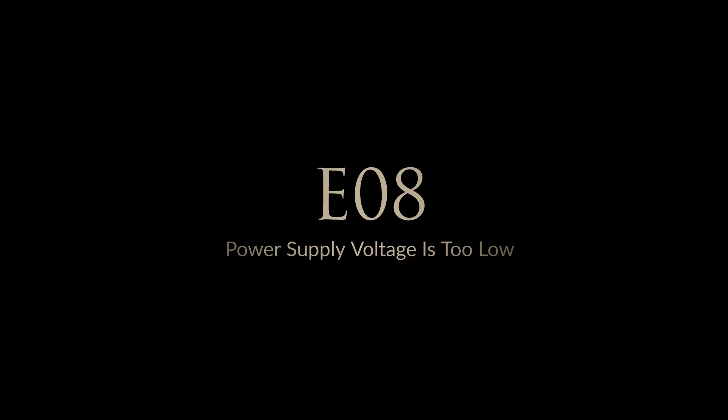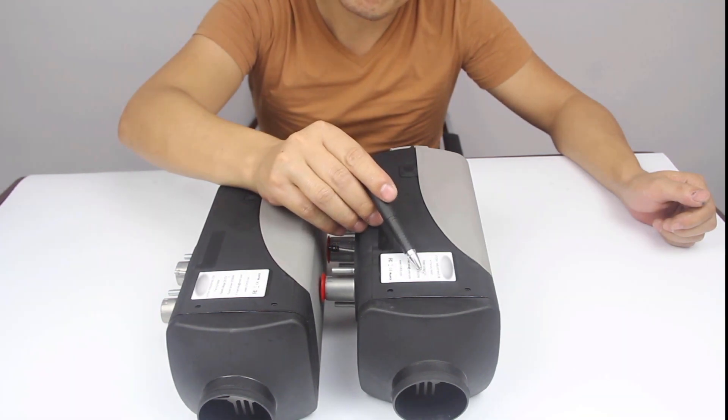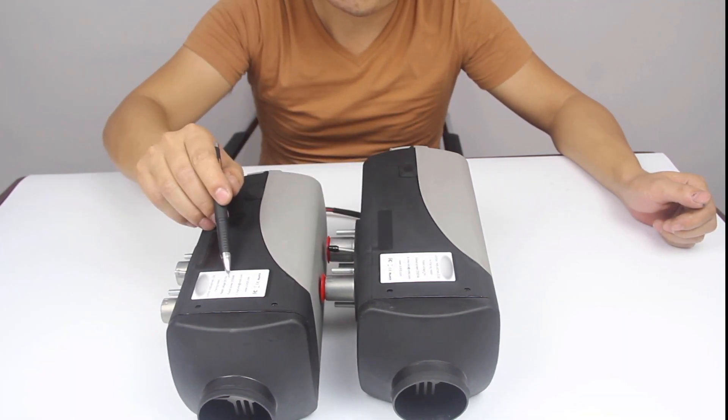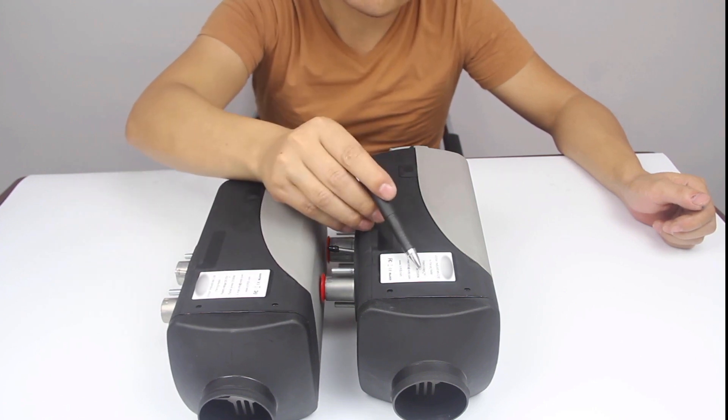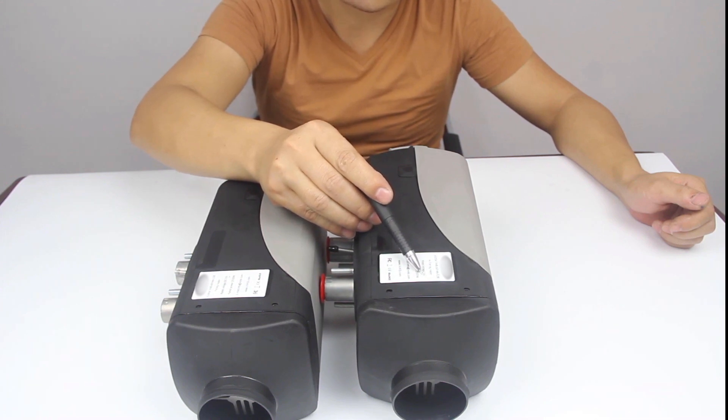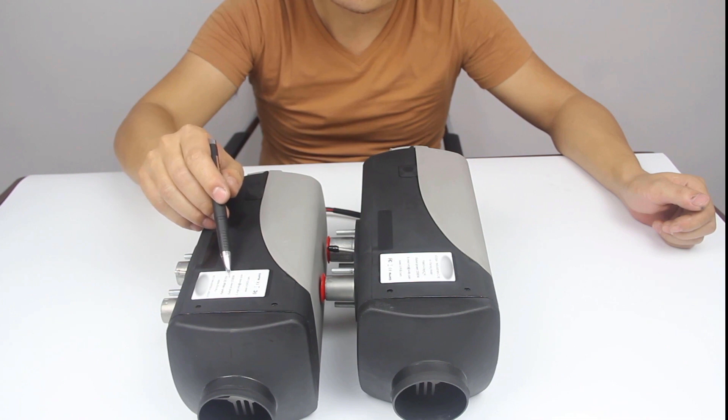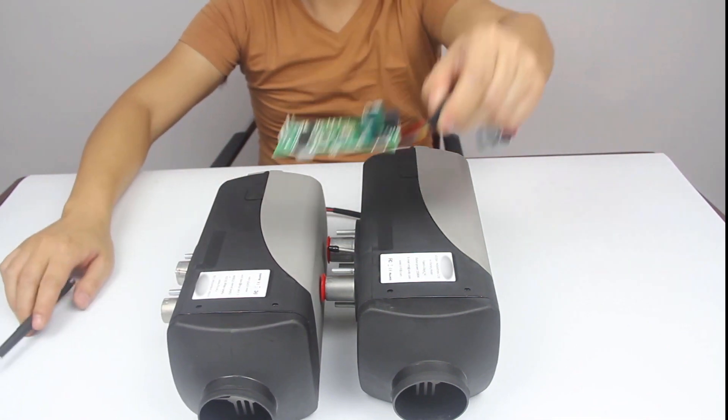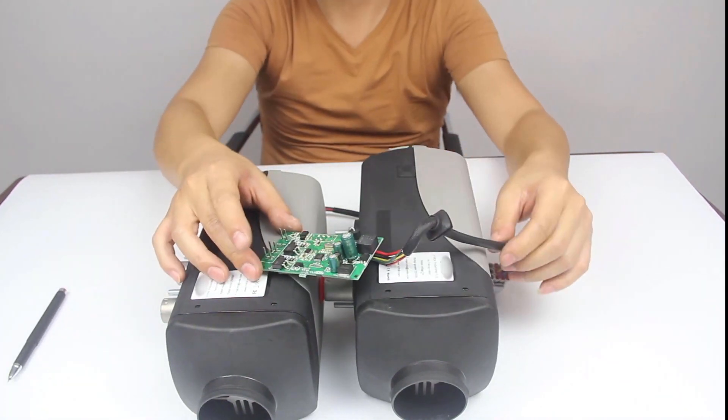Error code 8, the power supply voltage is too low. To resolve error 8, it is necessary to inspect three specific locations. Please note that this task may pose challenges, as previously stated during error 7 reviews. Make sure you verify that all voltages align correctly, including those specified on labels, battery requirements and vehicle specifications, as well as alternator output. Thirdly, check the circuit board to make sure that it is not broken.